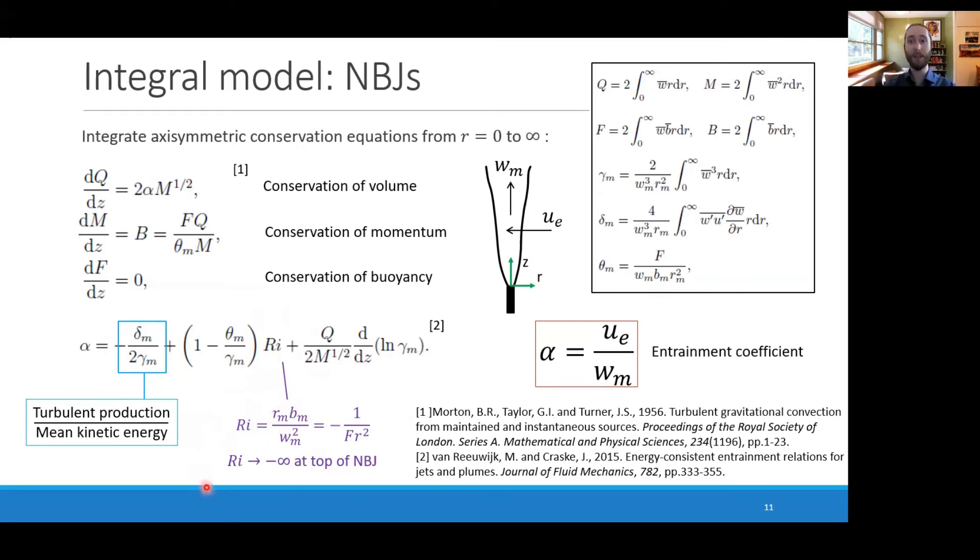This is a negative number in negatively buoyant jets and approaches negative infinity at the top as the velocity goes to zero. The third term reflects the shape of the profiles and how they change with axial distance. As we saw in the mean velocity plot on the previous slide, the velocity profiles were Gaussian over a wide range of locations, and so this term goes to approximately zero.